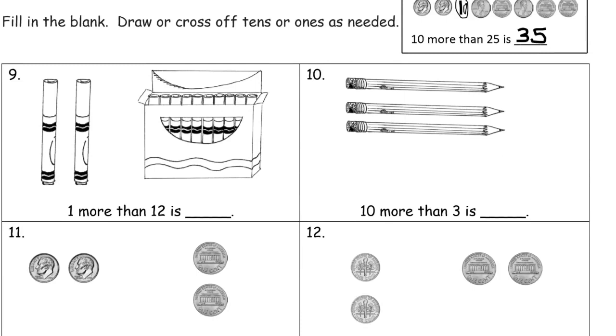Now it's fill in the blank. Draw or cross off tens or ones as needed. Reading carefully that we're looking for more and less. So this says one more than twelve. So we have a box of ten, that's a group of ten, and we want one more marker. And that's thirteen. And this is ten more than three pencils. So I'm just going to draw a box of pencils and call it a ten.